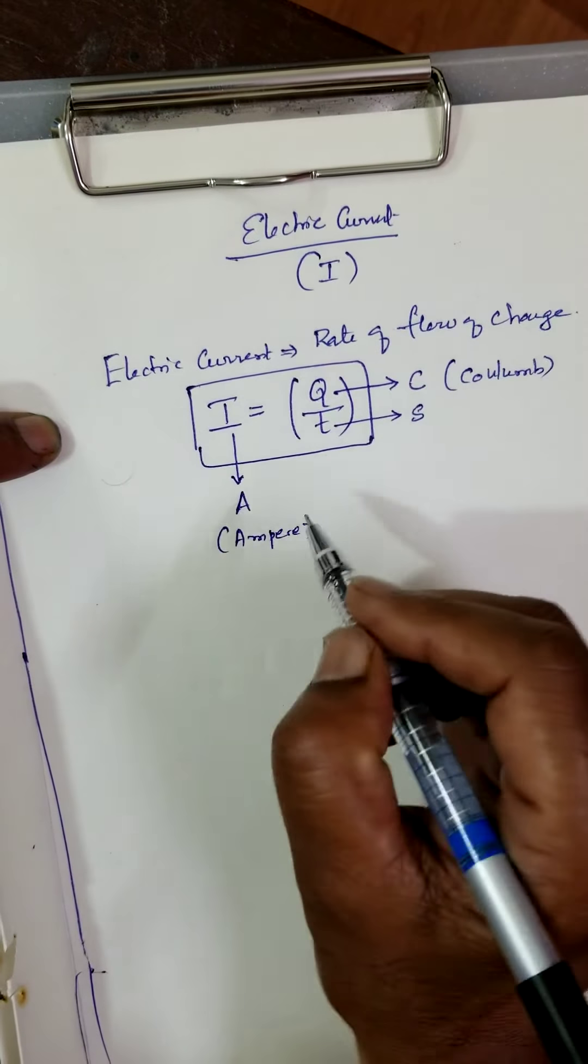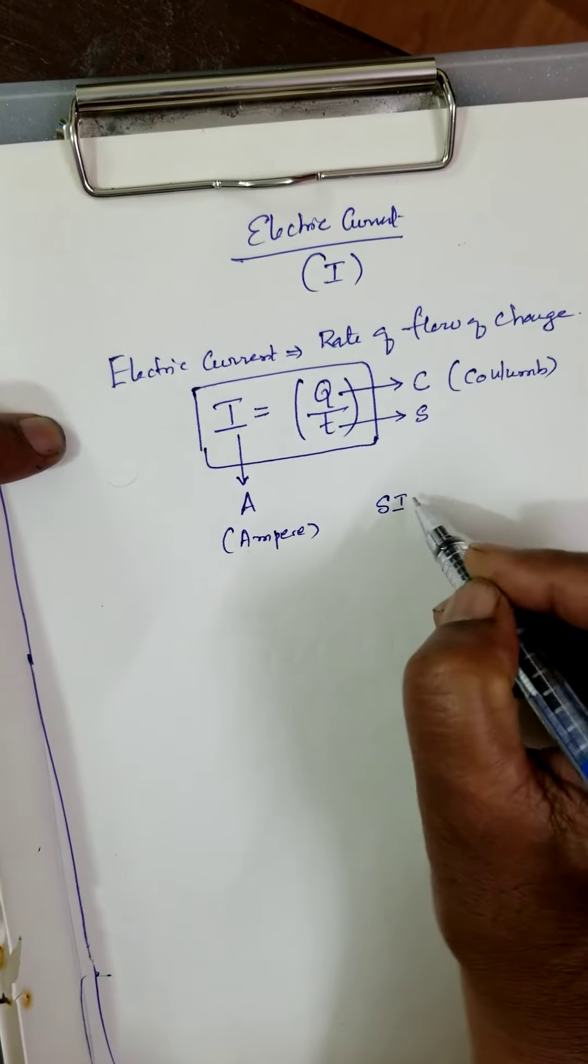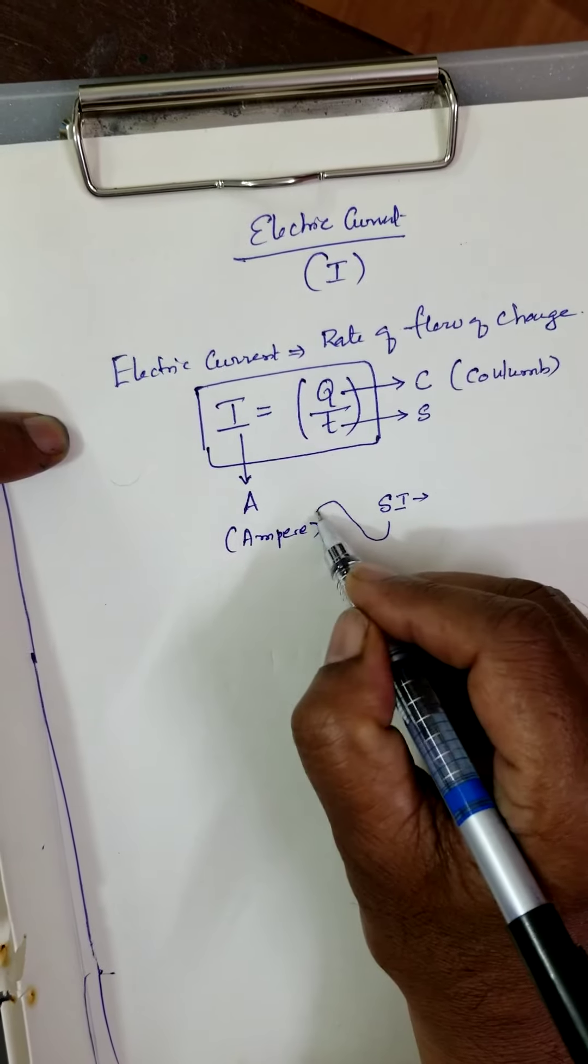What is the SI unit? That is the SI unit of electric current. SI unit of electric current is Ampere.